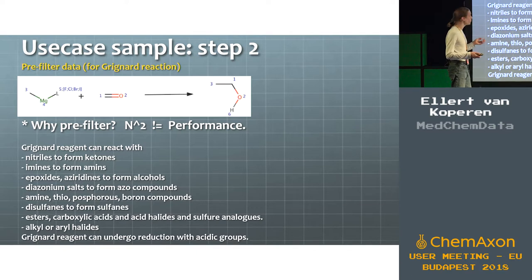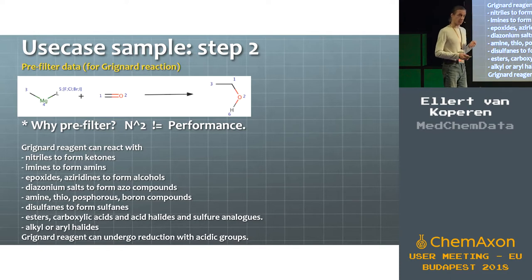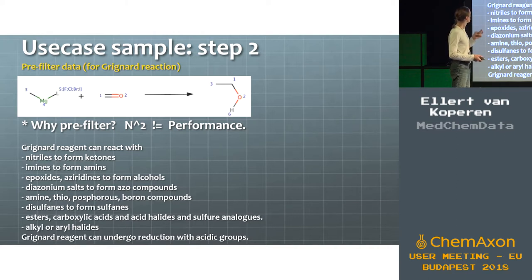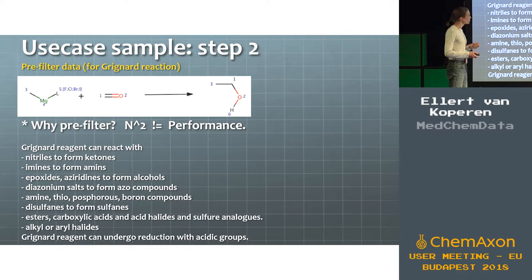Because if you're speaking about, let's say, 10 million compounds and this reaction has two reactants, if you would throw both data sets into those two reactants you would get a hundred thousand billion combinations. Any cluster would be busy with that for a very, very long time — bad idea. So you have to pre-filter the data. The first reactant is very easy: you just select everything that has a magnesium bonded to a halogen and you're done — a very small set, about 120 compounds. But the second one is a bit more difficult: it has the condition that oxygen needs to be double-bonded to a carbon.